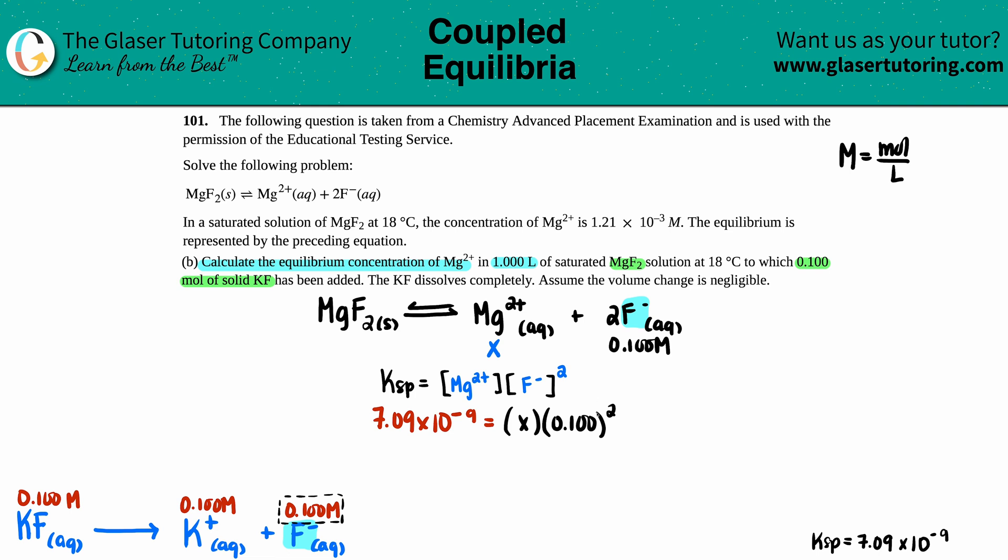I'm going to divide on both sides by 0.01. This cancels out. I get x equals 7.09 times 10 to the negative ninth divided by 0.01, which gives 7.09 times 10 to the negative seventh. That's molarity.